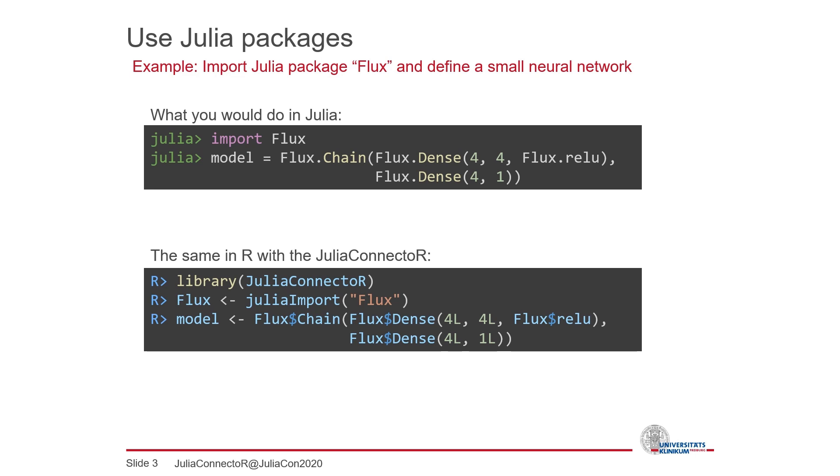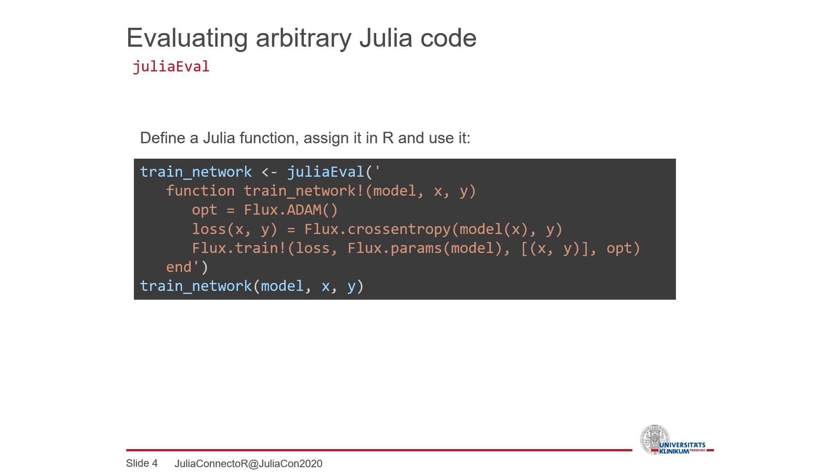It is also possible to couple Julia and R more loosely. The JuliaEval function can evaluate arbitrary Julia code that is passed as a string and return the result to R. With this we can for example define a training function for the model by evaluating its definition in Julia. The result of this evaluation is a function that can be assigned and used as an R function.